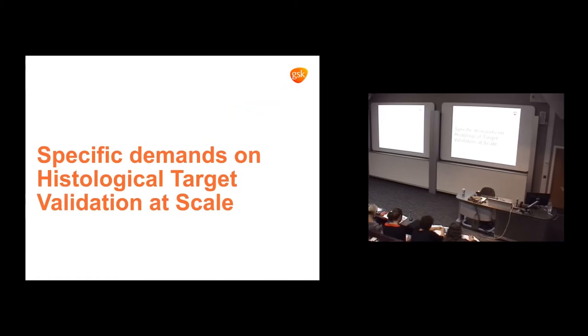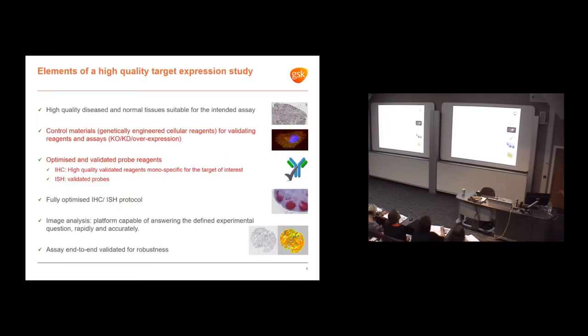Moving on to histology, there are specific demands for histological target validation at scale. For a good quality target expression study, we need high quality disease and normal tissue, control materials to validate probe reagents, optimized IHC and in situ hybridization protocols, image analysis, and end-to-end assay validation for robustness. The rest of the talk focuses on these two areas.